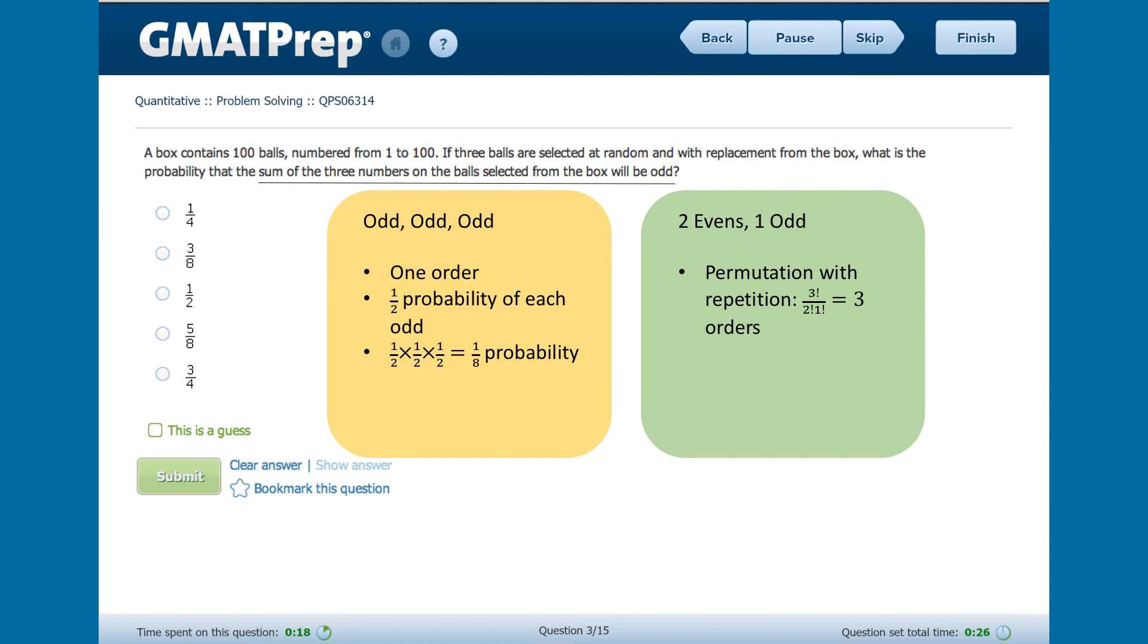Now with two options, even and odd, for each of the three picks, we have two times two times two equals eight possible permutations in total. So the probability of getting two evens and one odd is three out of eight.